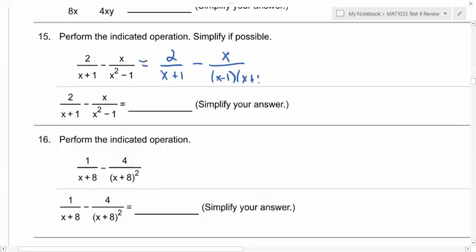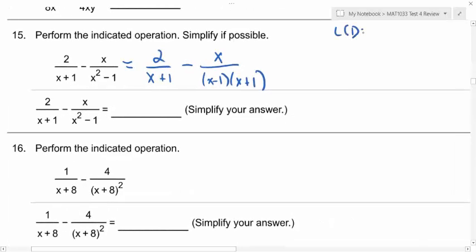So then if we need a common denominator, what is our LCD going to be here? x minus 1, x plus 1. Good. So the second fraction already has that, but what is the first fraction missing that it doesn't have in the denominator? It's missing the x minus 1. So if we have to multiply the denominator by x minus 1, that means we also have to multiply the numerator by x minus 1.